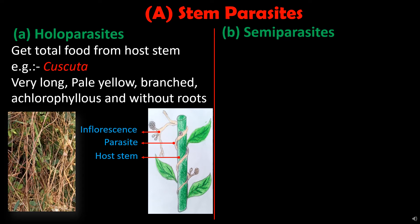Once the connection is established, the parasitic plant develops modified adventitious roots named haustoria, as shown in the picture. The vascular tissue of the parasitic plant makes contact with the vascular tissue of the host plant through these haustoria and starts absorbing organic food, water and minerals. Once the parasitic plant starts absorbing total food from the host stem, it loses connection from the soil and becomes completely dependent on the host plant.